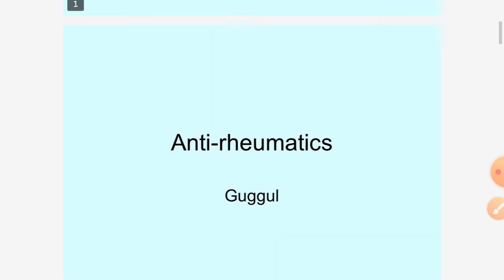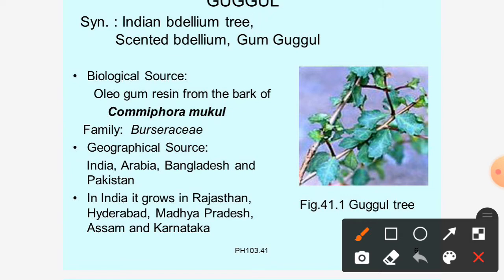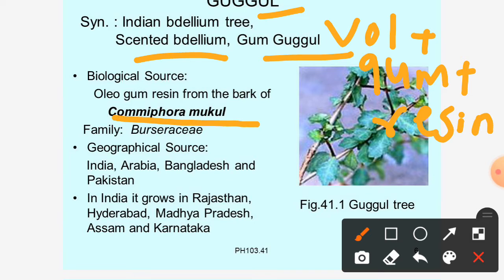The first anti-rheumatic drug is Guggul. Its synonyms are Indian Bdellium tree, Scented Bdellium, and Gum Guggul. It is an unorganized drug. The biological source is the oleogum resin obtained from the bark of Commiphora mukul. It is a combination of volatile oil, gum, and resin.